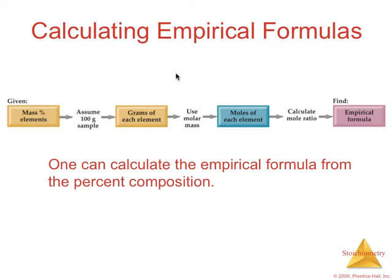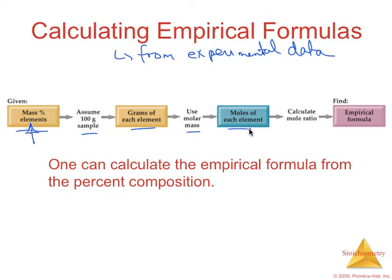So how do we calculate empirical formula from experimental data? First thing that we're going to be given from an experiment is the mass percent of each element in the compound. You're going to assume that there's 100 grams of the sample. You're going to find grams of each element. You're going to use the molar mass to calculate the moles of each element. You're going to calculate that simplest mole ratio and then convert that into an empirical formula.